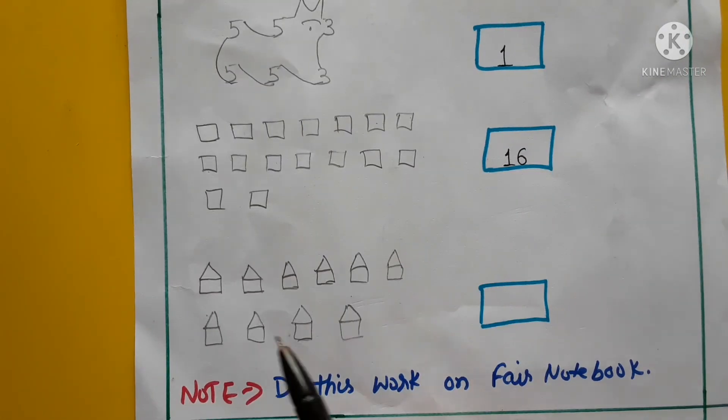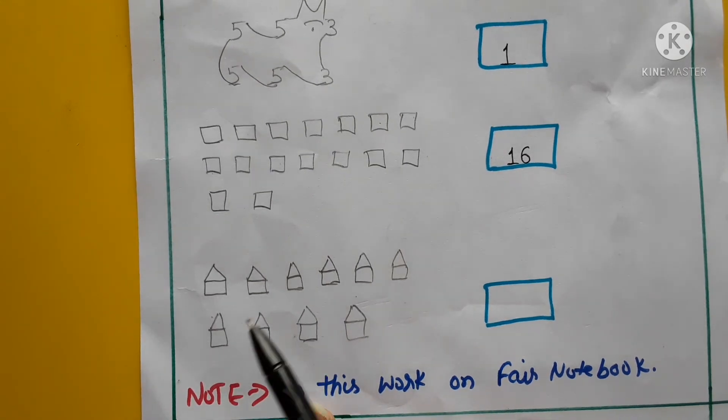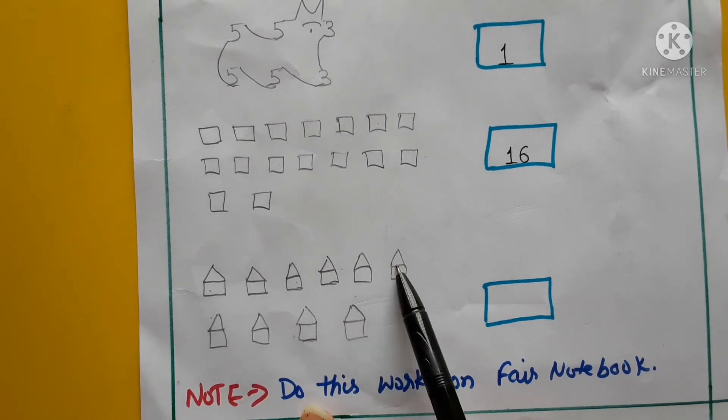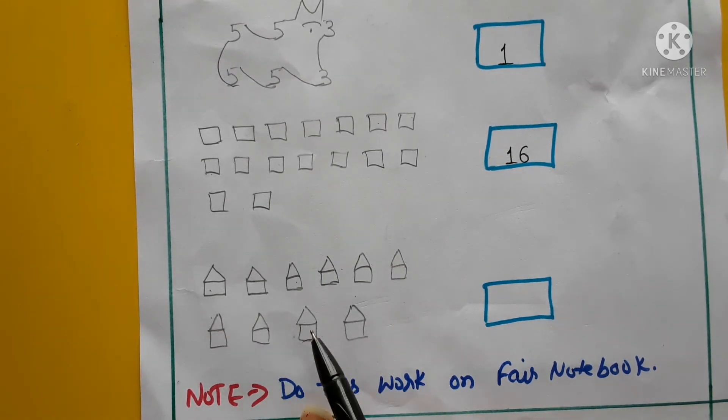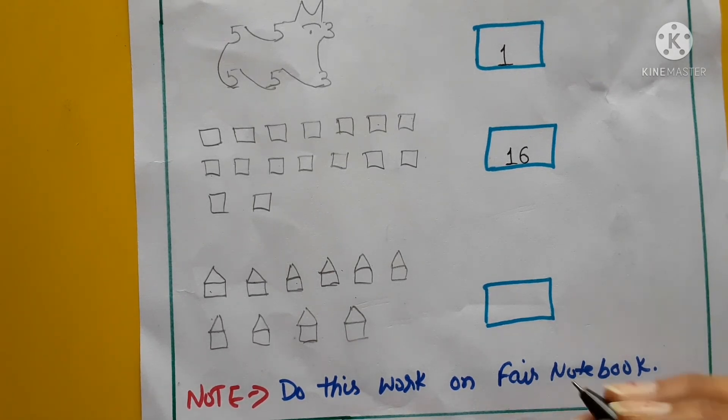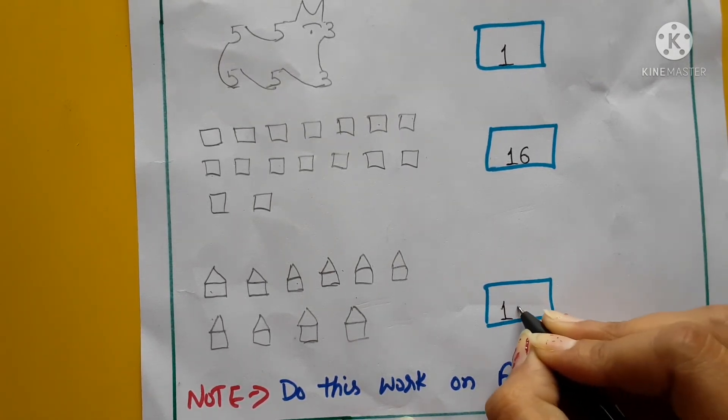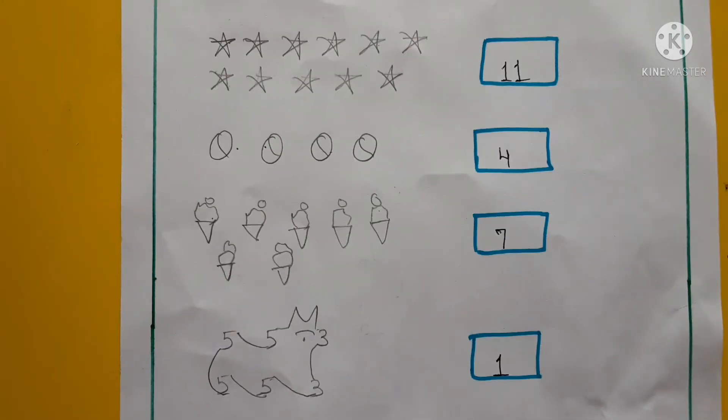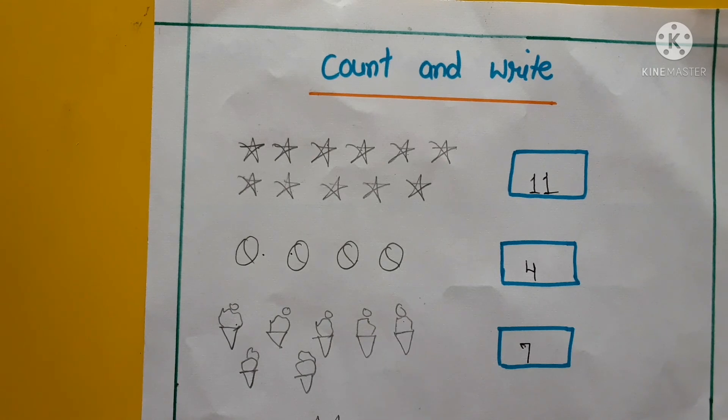Next, yeh dekho, cones hai na. Toh yeh count karna hai, kitne hai? 1, 2, 3, 4, 5, 6, 7, 8, 9, 10. Kitne hai yeh? 10 hai na. Toh 10 kaise hoga? 1, 0, 10. Toh 10 kaise hai? Yeh bhi aapne apni fair notebook mein karna hai work. Toh 10 kaise hai? Kya topic hai yeh? Count and write. Toh 10 kaise hai? Pehle humne yeh objects count karna hai, uske baad write karna hai ki kitne hai.